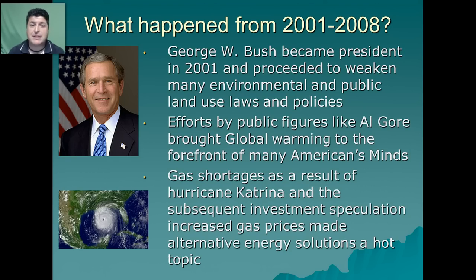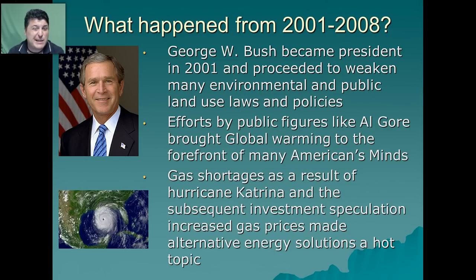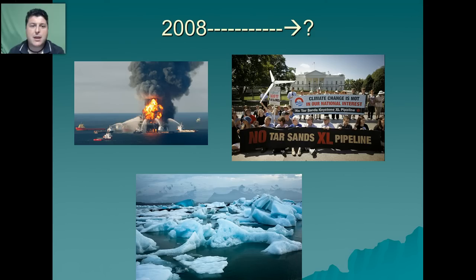From 2001 to 2008, George W. Bush became president and proceeded to weaken many environmental and public land use laws and policies, though in 2006 he did create the world's second largest marine reserve in waters surrounding the Hawaiian Islands. Efforts by public figures like Al Gore brought global warming to the forefront of many Americans' minds during this time. Gas shortages as a result of Hurricane Katrina and subsequent investment speculation increased gas prices and made alternative energy solutions a hot topic. More recently, we've seen the oil spill brought on by the explosion of the Deepwater Horizon, the controversy surrounding the Keystone Pipeline and the use of tar sands from Canada as an energy source, and of course climate change and biodiversity loss continue to be hot topics.